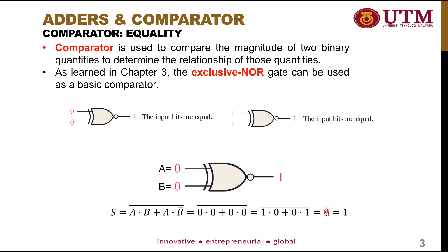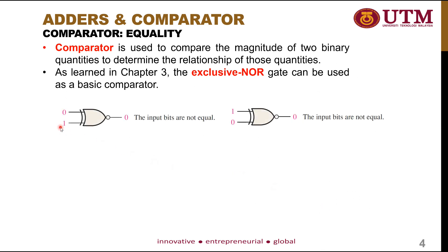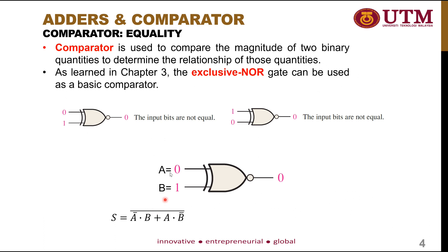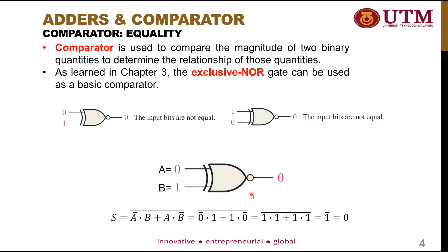What if the inputs are not similar? If A equals 0 and B equals 1, the output of the XNOR gate becomes 0. Substituting into the equation: 0-bar·1 + 1·0-bar with the full bar, which becomes 1·1 + 1·1 = 1-bar = 0. So in summary: if the inputs are the same, the XNOR output is 1; if inputs differ, the output is 0.